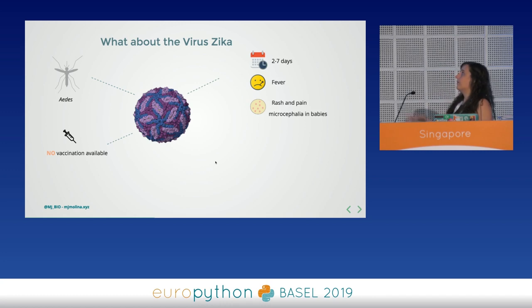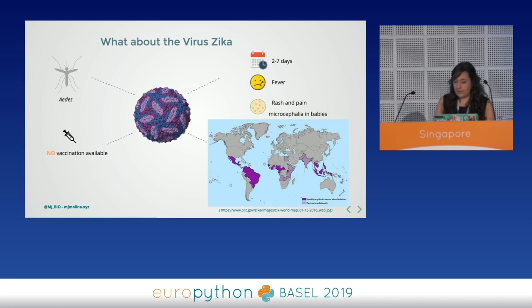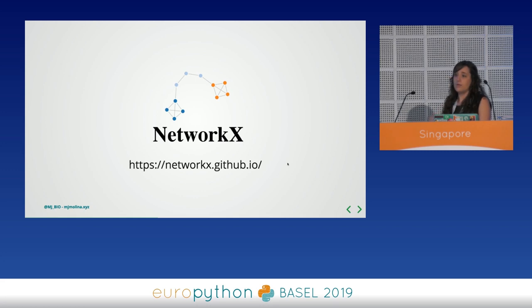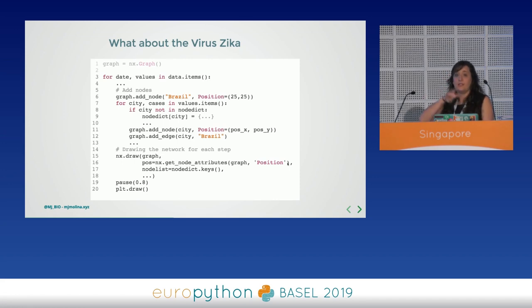The most serious and dangerous symptom is microcephaly in newborns. Here is the distribution of the virus nowadays. The most important thing when talking about viruses or illness is how fast they spread. For that we can use NetworkX, which is a model that helps us to visualize and generate a network. In this case, we are going to analyze cases of illness in Brazil — we generate a graph with different nodes representing different cities of Brazil and see how the spread of the virus evolved.